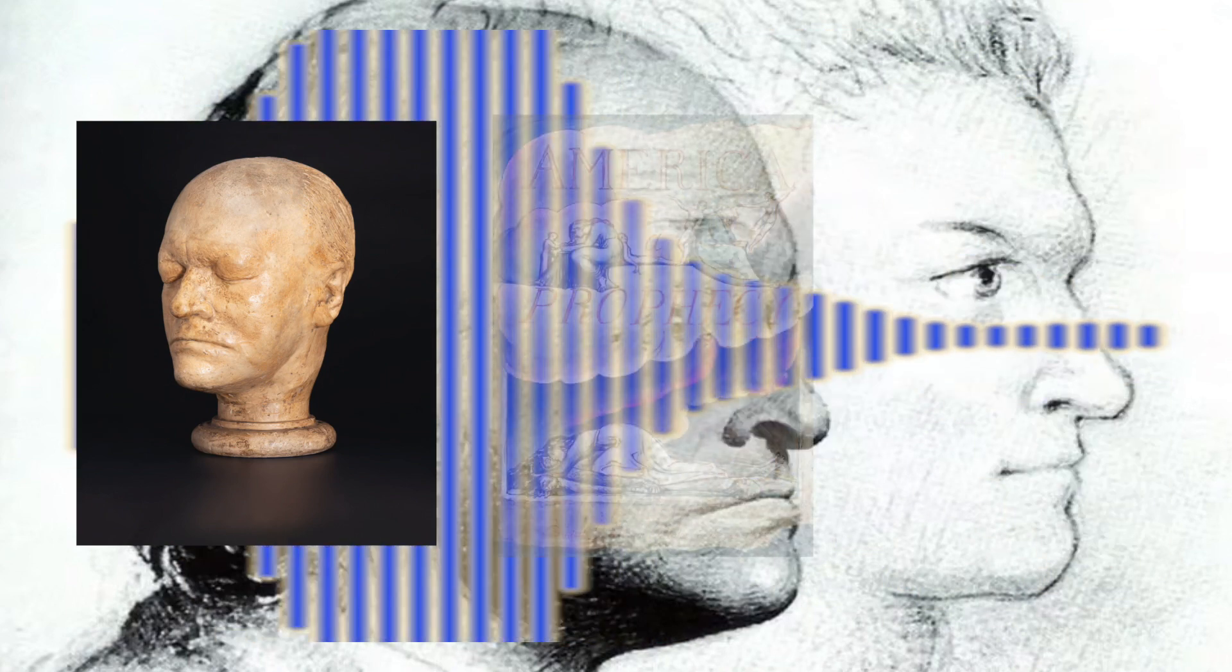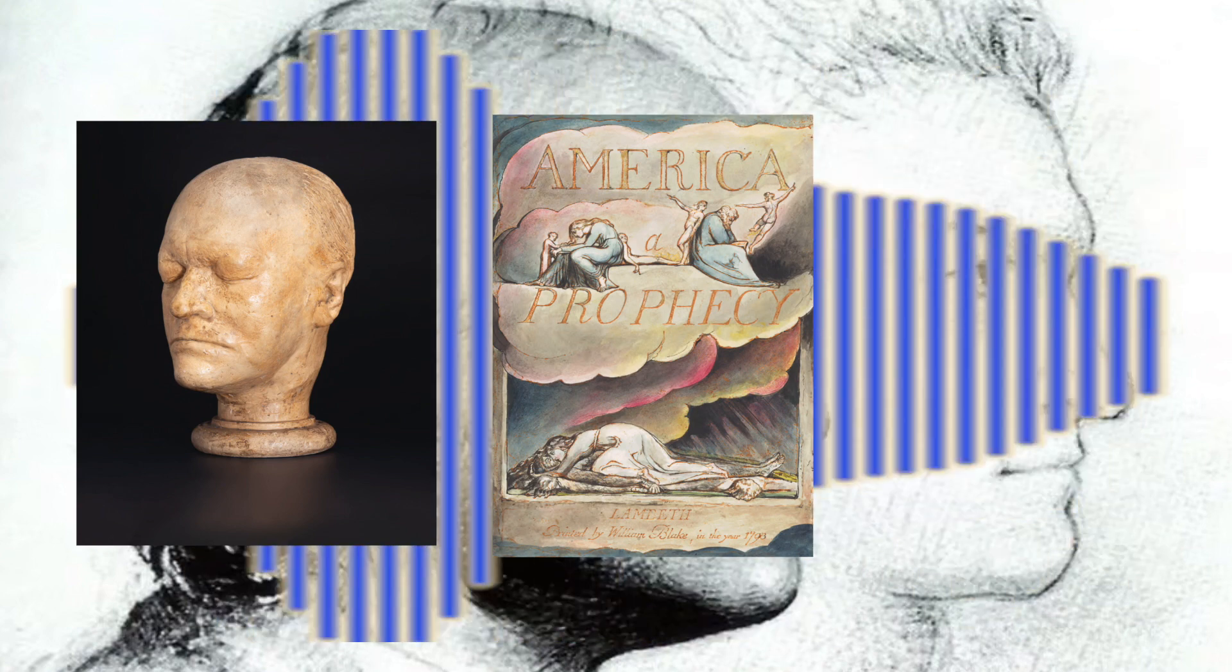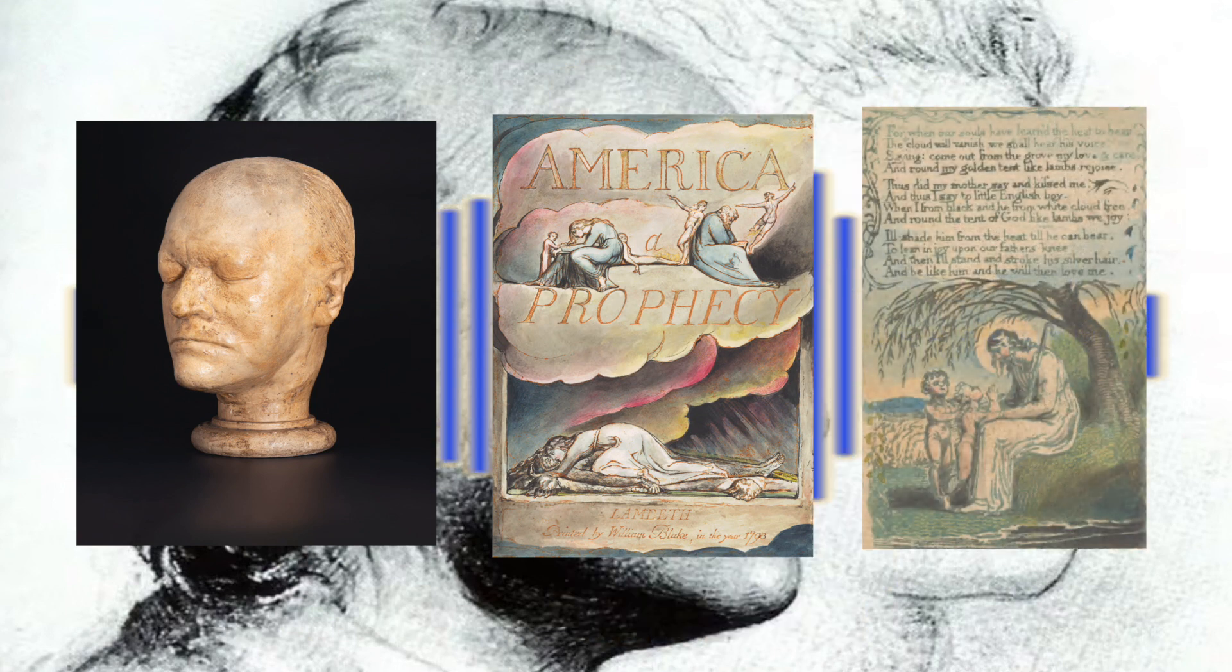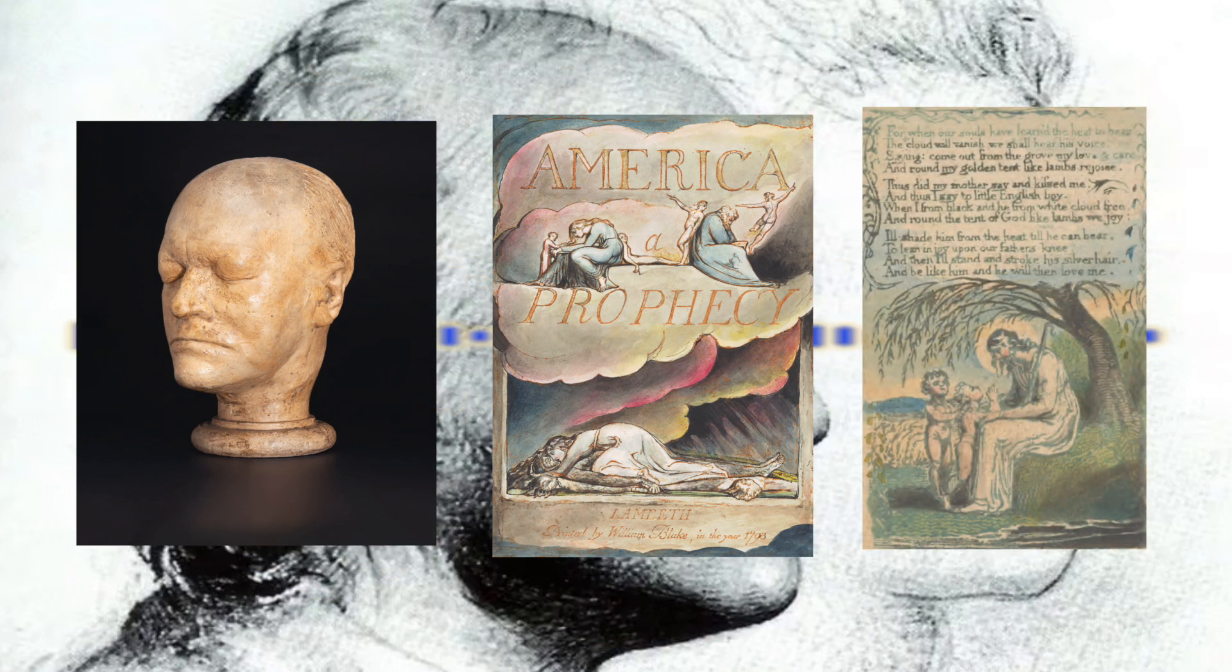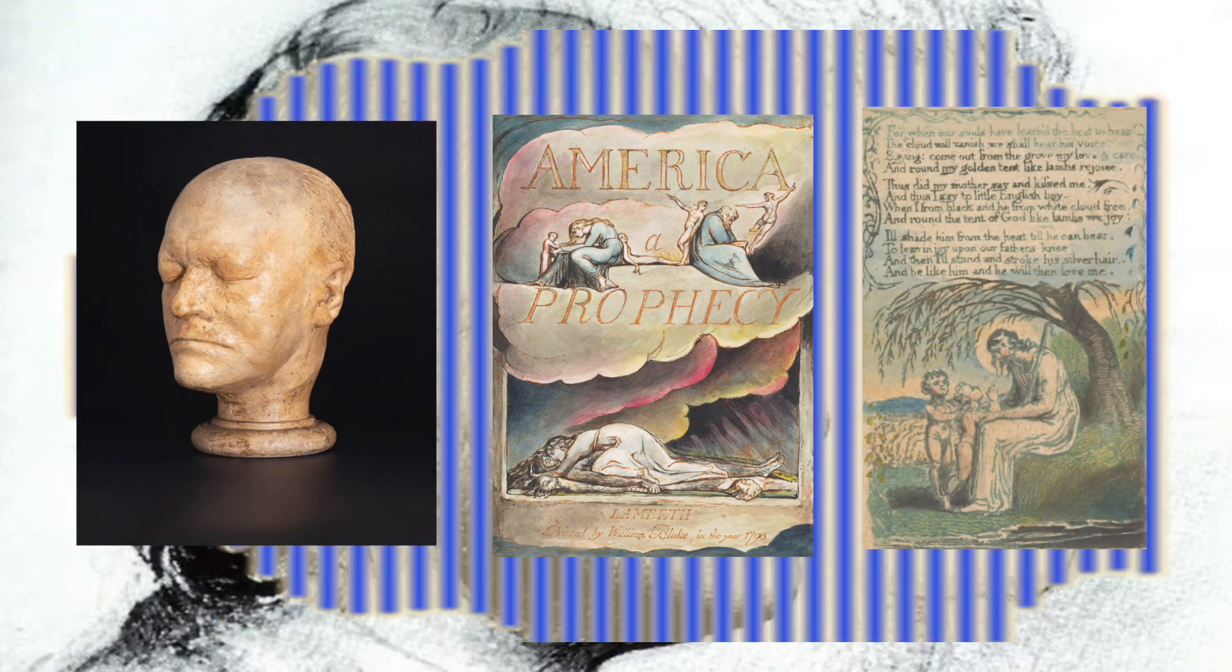The Fitzwilliam has a number of exceptional pieces by Blake, particularly, famously, copies of America, Europe of Prophecy. It also has one of the best examples of Blake's Songs of Innocence and Experience, which interestingly wasn't much on display in the show itself.